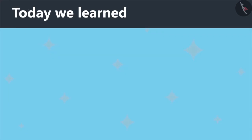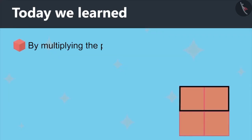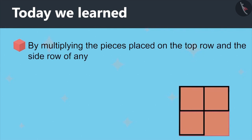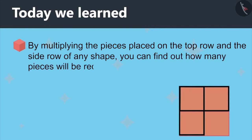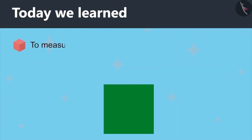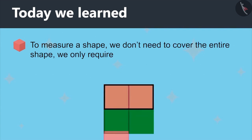Today we learned by multiplying the pieces placed on the top row and the side row of any shape, you can find out how many pieces will be required to cover the shape completely. That is, to measure a shape, we don't need to cover the entire shape. We only require enough pieces to cover the top and side edges.